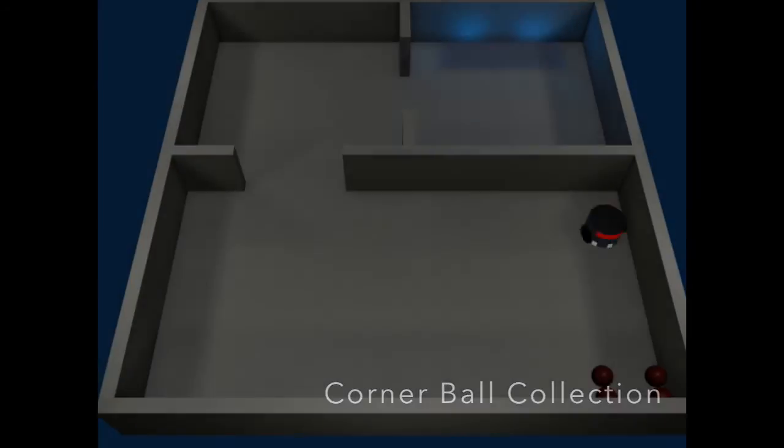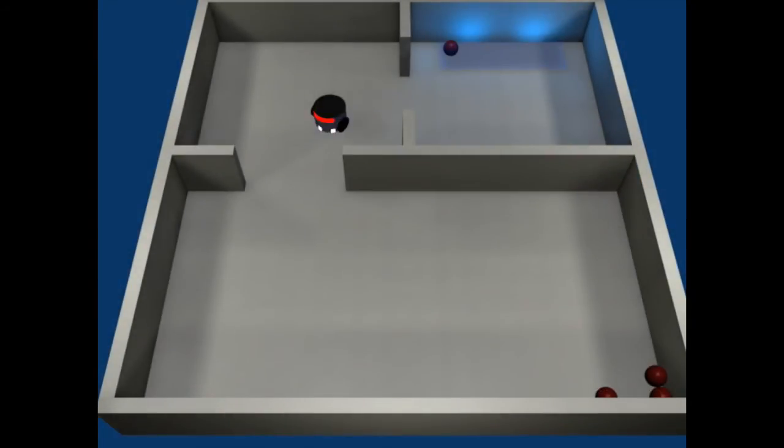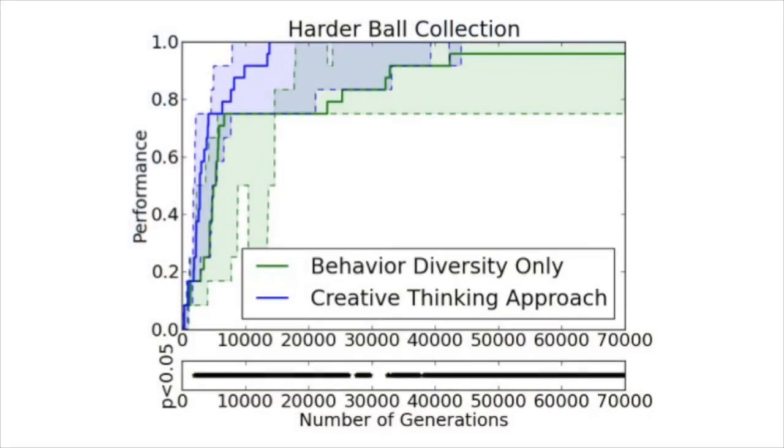In another difficult variant of the ball collection experiment, the balls are tucked away in a corner. In this setup, the robot is less likely to run into a ball, making the problem harder to solve by chance. Here we see that the creative thinking approach significantly outperforms behavioral diversity only on nearly every generation.